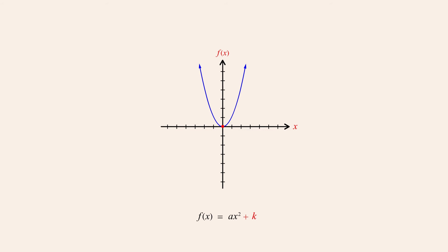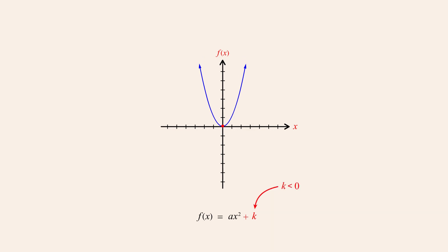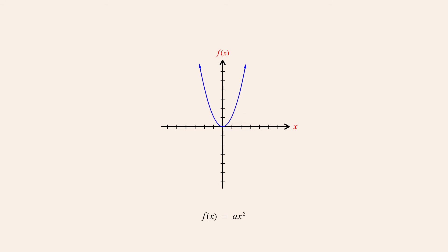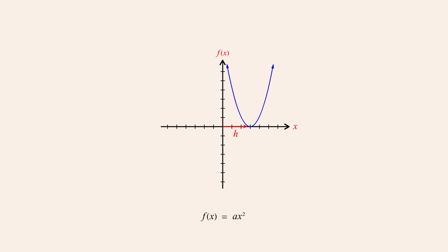So in vertex form, the parabola is shifted k units up or down depending on whether k is positive or negative. Now instead of shifting the parabola vertically, let's say we want to shift it horizontally by h units. To shift any function of x h units to the right, we replace x in the function with x minus h. But this seems counter-intuitive — why would subtracting h from x cause the function's graph to move to the right? To see why, let's start with a very simple quadratic function, x-squared, whose vertex is located at the origin.